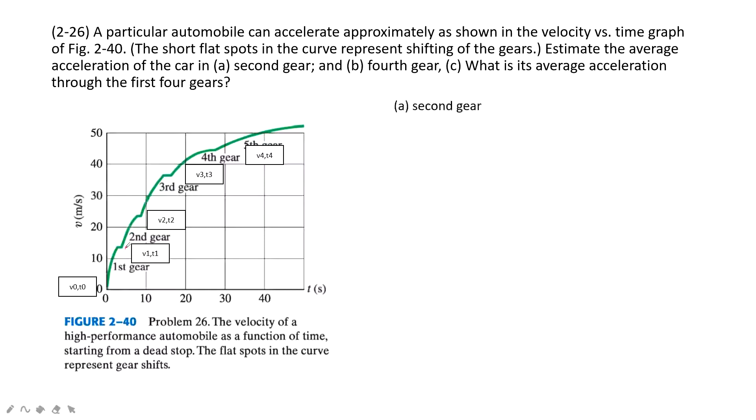So the 2nd gear is from there to there. We can estimate the V1, T1, V2, T2. And then we can get the average acceleration by using the change of velocity divided by time taken. Then it's done.